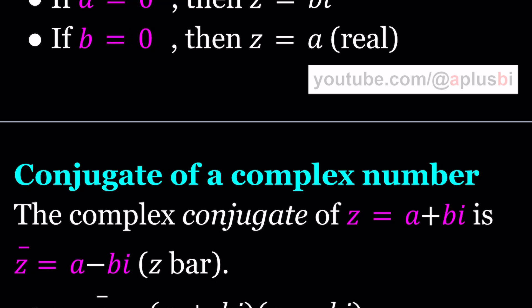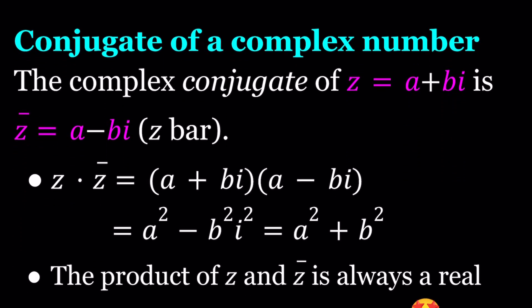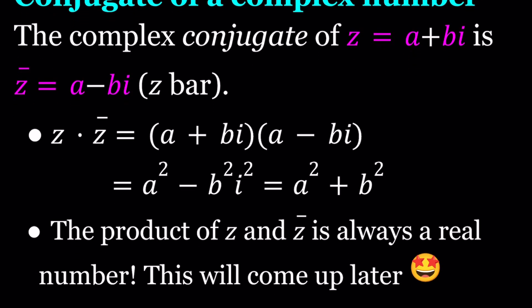The next thing we talked about was the conjugate of a complex number. If z is a plus bi, its conjugate, which you read as z bar because of that little line, is a minus bi. There's something special about a complex number and its conjugate because when you multiply them you get a real number.